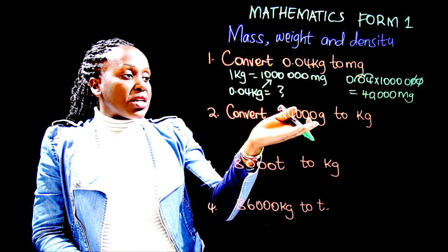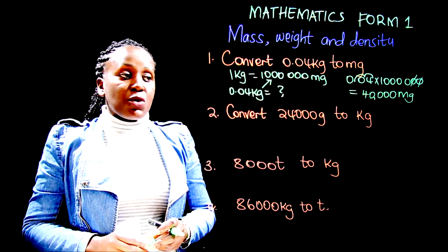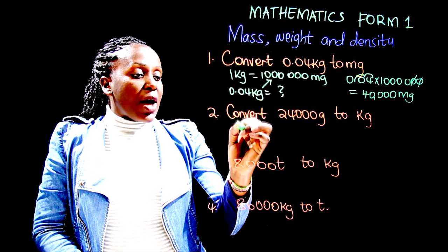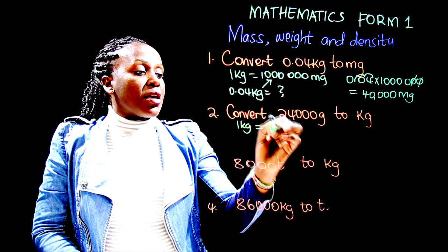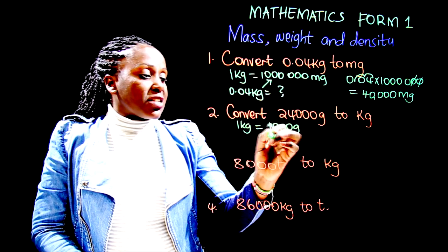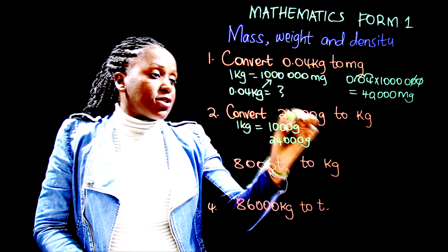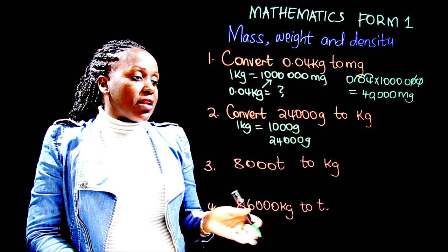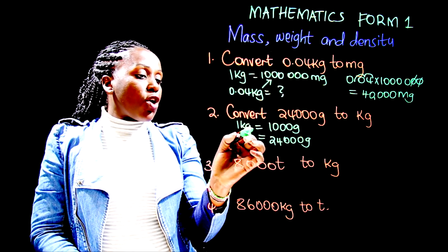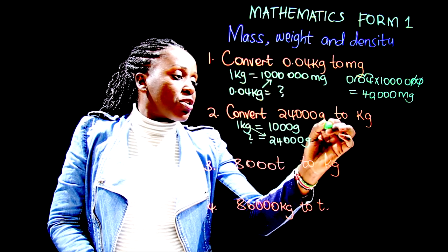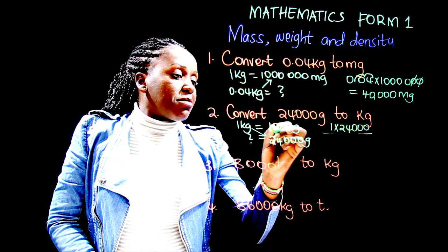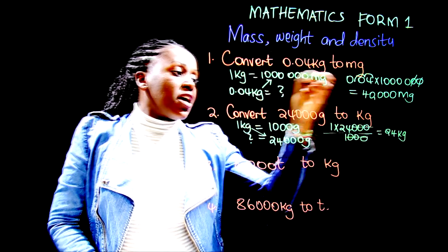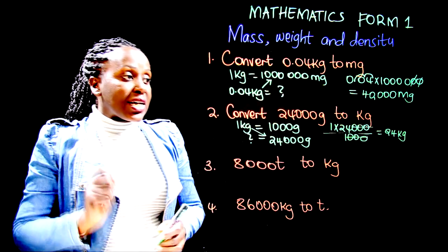Next we convert between grams and kilograms. A kilogram is greater, so one kilogram equals one thousand grams. The question gives us twenty-four thousand grams. We cross multiply: one times twenty-four thousand divided by one thousand. The three zeros cancel and we have twenty-four kilograms. So twenty-four thousand grams equals twenty-four kilograms.